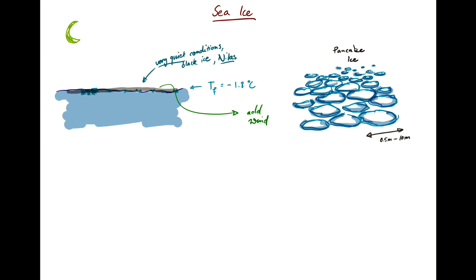The transition phase between the first young Nilas and the pancake ice, when things are already kind of broken up, is typically called grease ice.